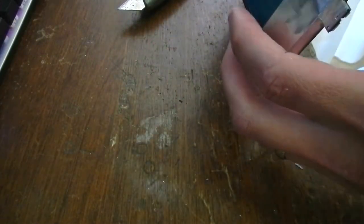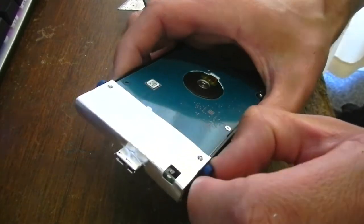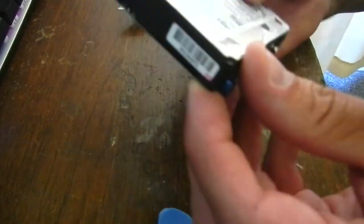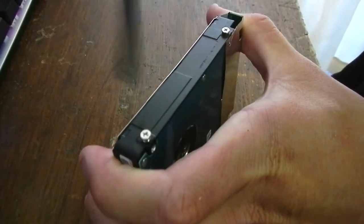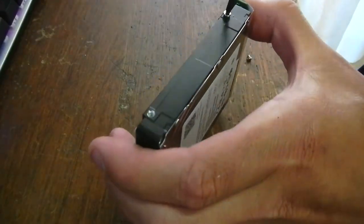Now in newer smaller ITX builds which I prefer building, most of these cases only accept this size of hard drive, so that limits your options. Just remove those little rubber grommets there that's on the screws for bump protection.